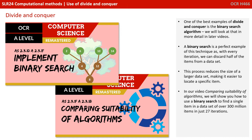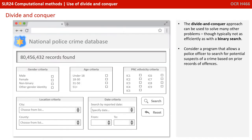In our video comparing suitability of algorithms, we'll show you how to use a binary search to find a single item in a data set of over 300 million items in just 27 iterations. The divide and conquer approach can be used to solve many other problems, though typically not as efficiently as with a binary search.